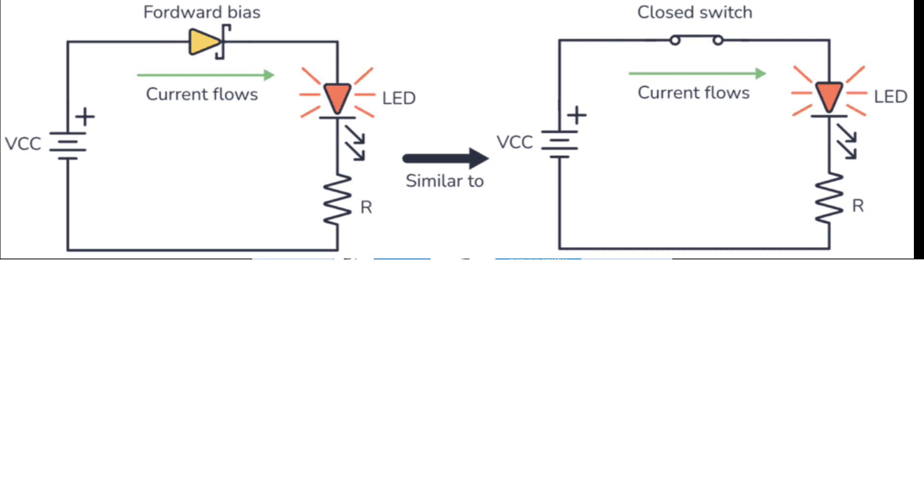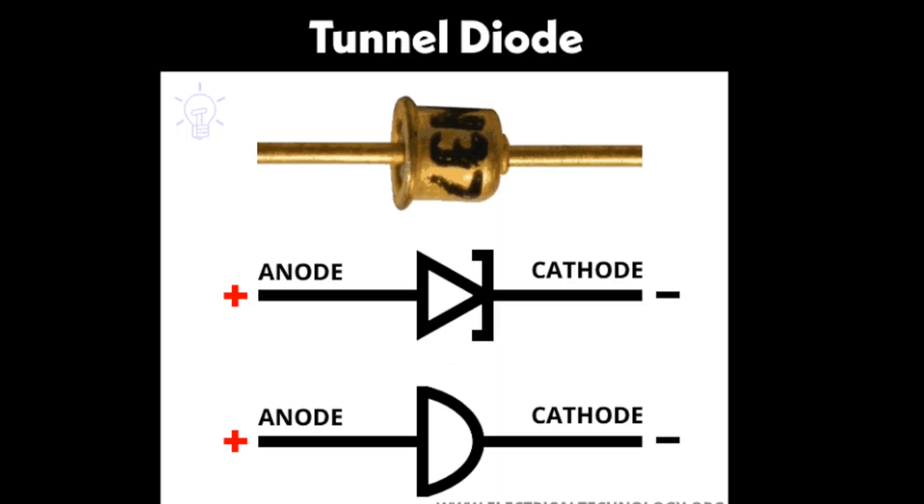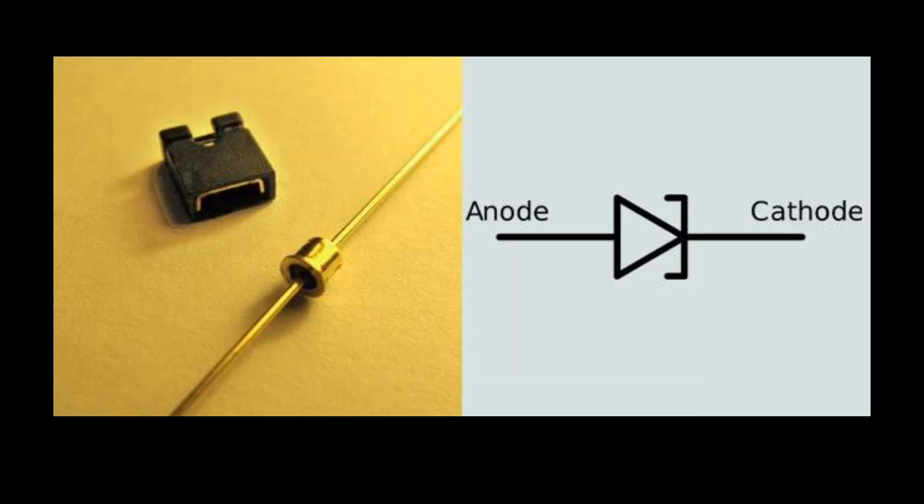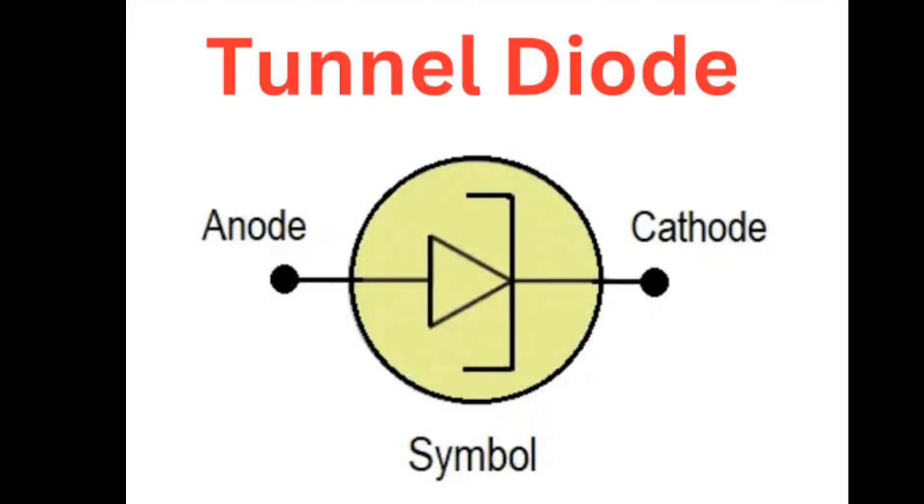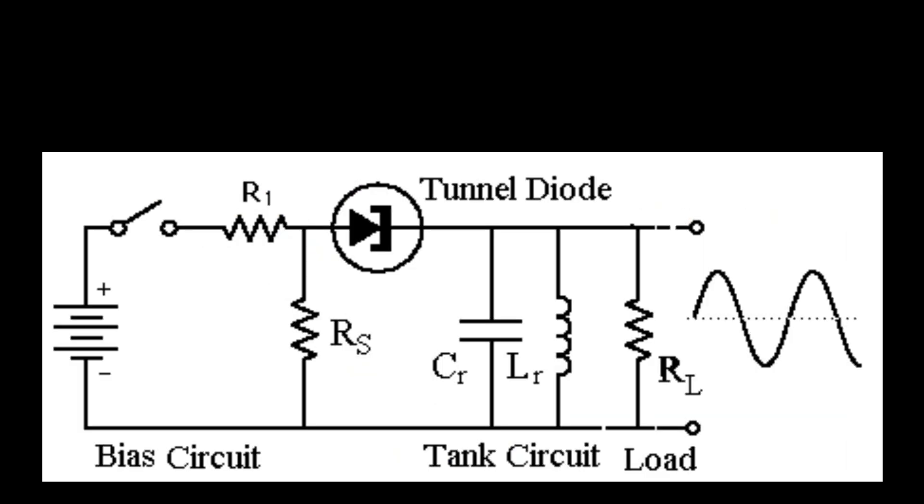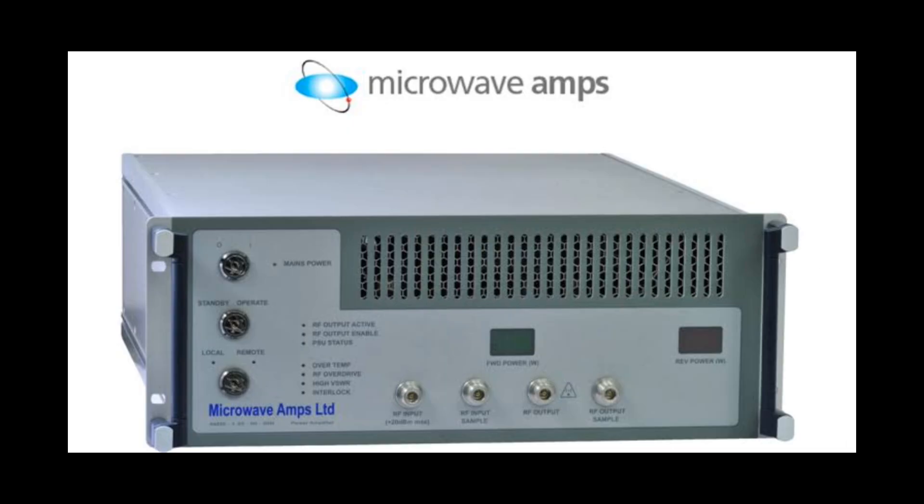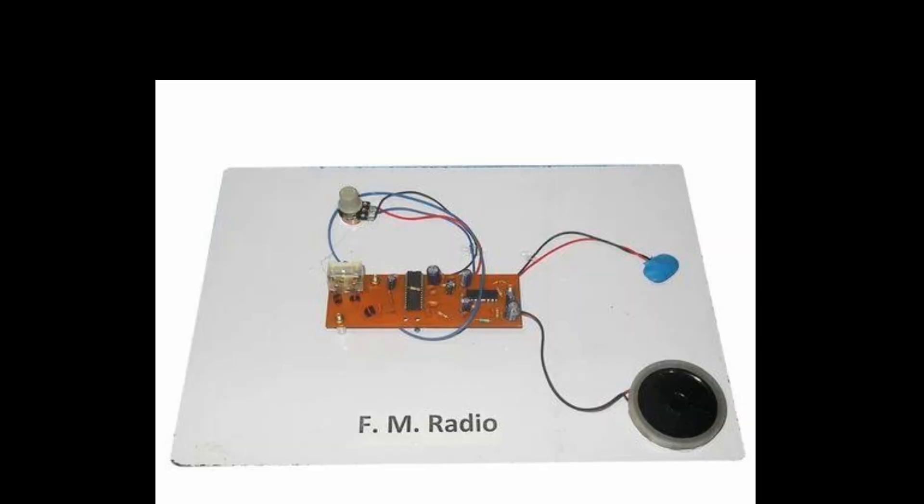Next we have tunnel diode. Tunnel diode has a very fast response time. Because of this, it finds application in many areas. It is used in oscillators, microwave amplifiers, FM receivers, etc.